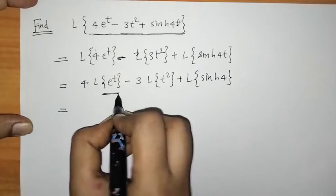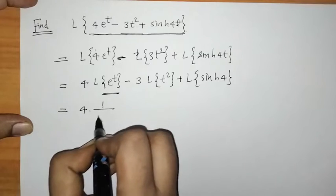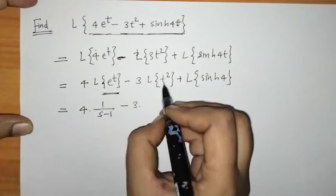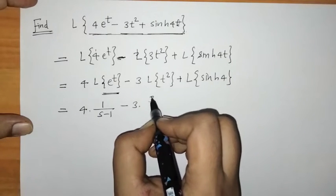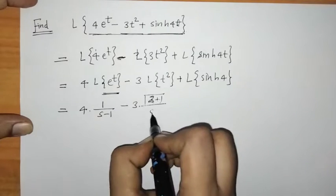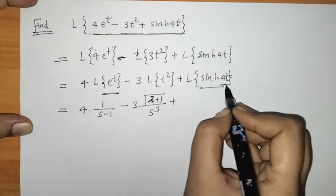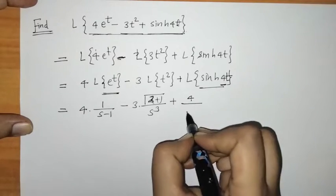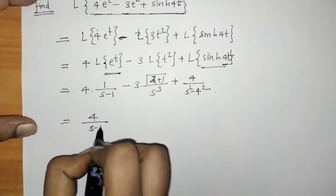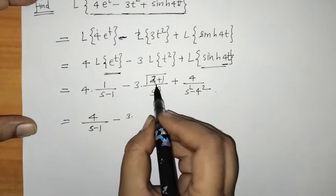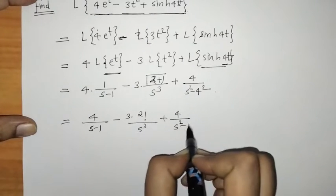Now applying the known Laplace transform formulas: the Laplace of e^(−t) is 1/(s−1), so we get 4·[1/(s+4)] — adjusting for the exponent. The Laplace of t² is Γ(3)/s³ = 2/s³, so we get 3·[2/s³]. The Laplace of sinh(4t) is 4/(s²−16). Combining these gives us the complete Laplace transform of the required combination.